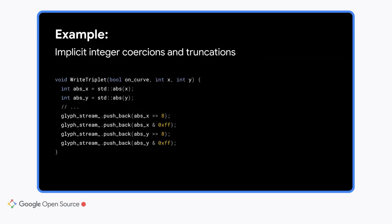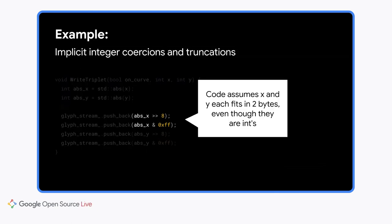Let's look at an example. The WOFF2 C++ code relies heavily on type coercions, since it uses int almost everywhere, except when reading from or writing to a font file. In the example here, we have a function called writeTriplet, which takes two ints, x and y, gets their absolute values, and then stores each of them in a vector of bytes called glyphStream. But in the highlighted code, you can see that it implicitly assumes that both x and y fit in two bytes. Unfortunately, that is not obvious at all when you read the code that calculates x and y and calls the writeTriplet function.